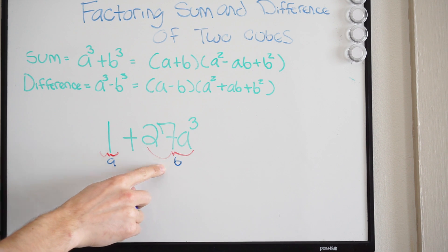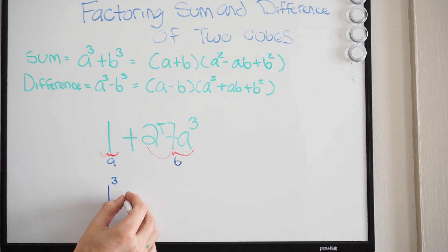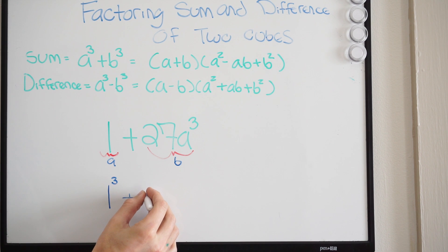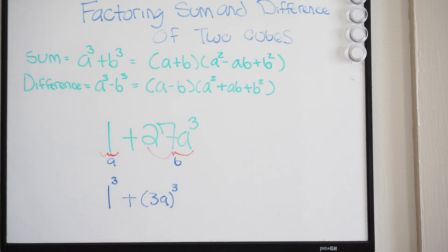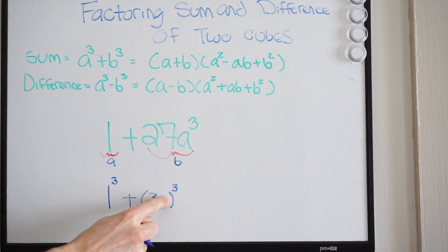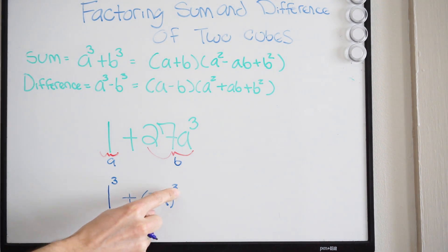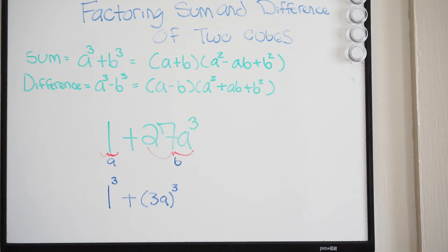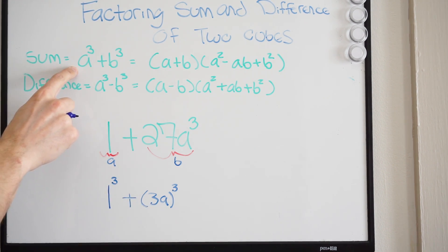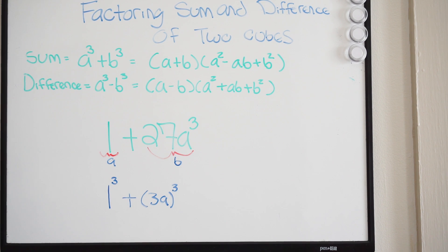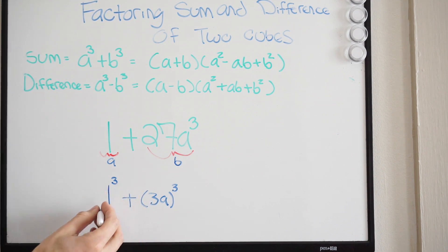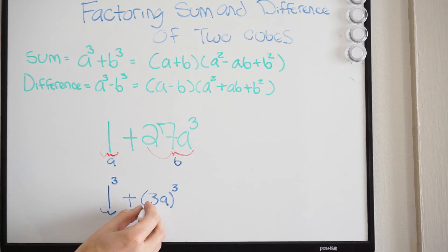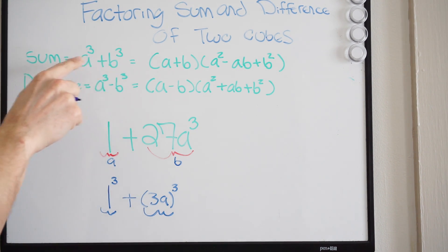And then if I look at my b term, what if I do plus 3a cubed? Well, this is just going to be a cubed, and 3 to the third power — that's 27. So we haven't changed anything; we've just manipulated this to our benefit so that we can factor using the sum of two cubes. Now I am in the correct form. Here is my a term, which is 1, and here is my b term, which is 3a.